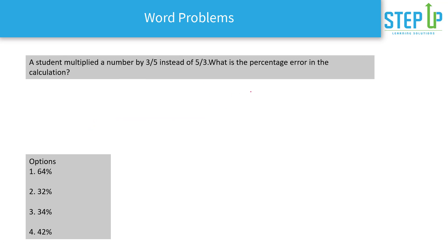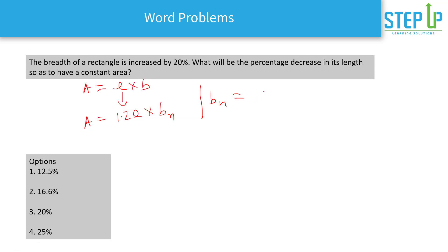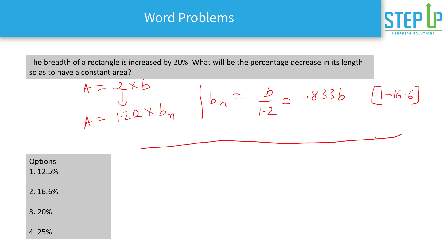Equating the two areas: L × B = new L × 1.2B. Solving, new length = L / 1.2 = 0.833L. The length has reduced from 1 to 0.833, which means it decreased by 0.1667, or 16.66%.